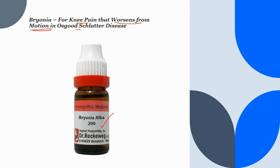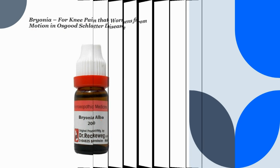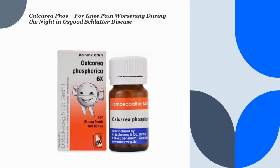The last homeopathic medicine is Calcarea Phosphorica, an effective medicine to treat Osgood-Schlatter disease when the pain in the knee worsens during nighttime. It is also indicated when knee pain is aggravated from stretching the legs. In some instances, walking worsens the knee pain and the knee feels as if it is sprained while walking. These are the homeopathic medicines that can be used for the treatment of Osgood-Schlatter disease.